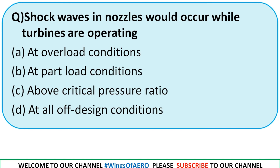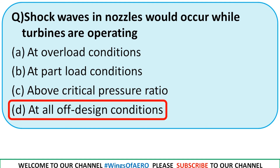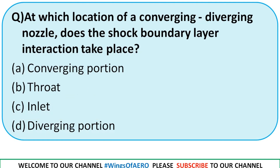Shock waves in nozzles would occur while turbines are operating at overload conditions, at part-load conditions, above critical pressure ratio, or at off-design conditions. Keep in mind that shock waves in a nozzle occur while operating at off-design conditions. The right option is option D.